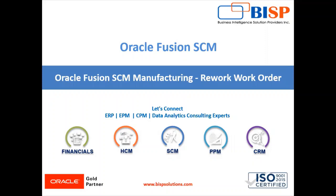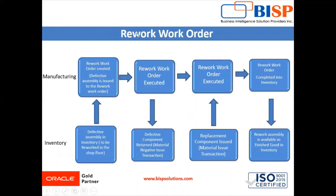In our Oracle Manufacturing application, it provides an additional option known as a rework work order, where the finished item must be reworked. A rework work order is created in manufacturing where a defective assembly from the inventory is issued to that work order and the rework operations are executed on the shop floor. The defective component is removed from the assembly and replaced with a new component — for example, a defective battery of a mobile phone is replaced with a new battery and returned to working condition. The reworked assembly is then completed in the inventory as the finished good. This is the rework order process.